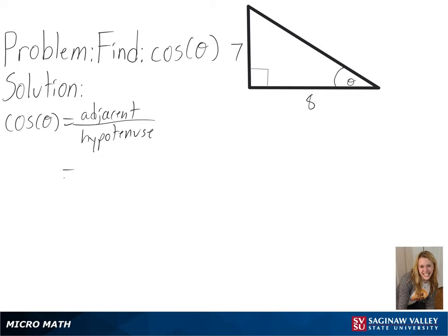We already know our adjacent side is 8, but we can use the Pythagorean theorem, or a squared plus b squared equals c squared, to solve for the hypotenuse. Plugging in 7 for a and 8 for b, we will get the square root of 113 for the length of our hypotenuse.